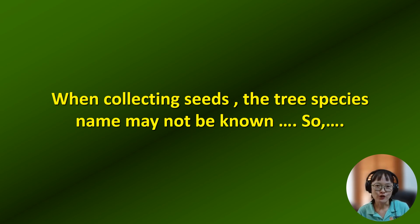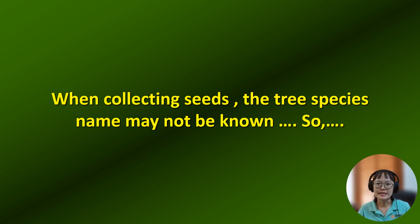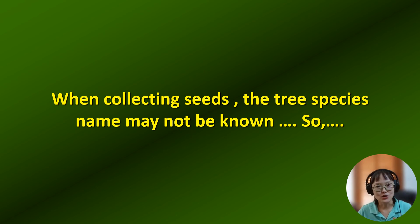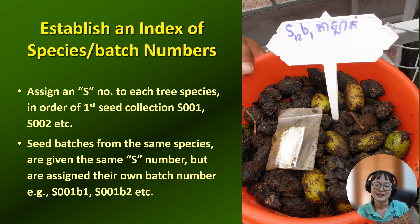At the beginning of restoration projects, it is common that we do not know all of the tree species names that we will work with. Sometimes local names are known but not the species name. So it is useful to come up with a system to index the species that you work with. For FORRU, we use the system called the S number — we assign an S number for each of the tree species we work with.